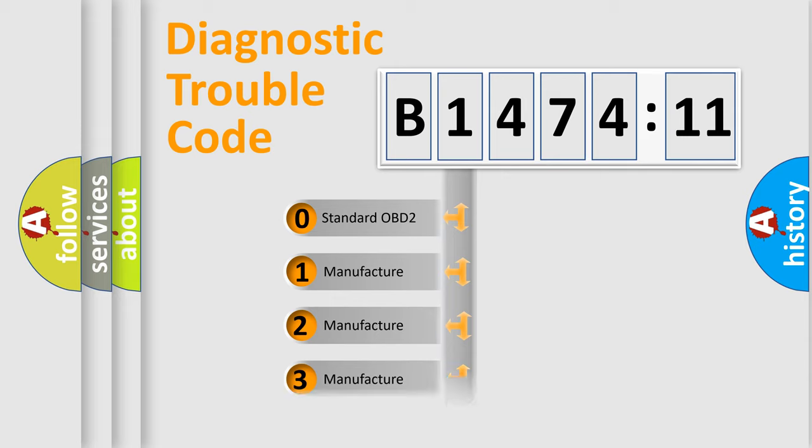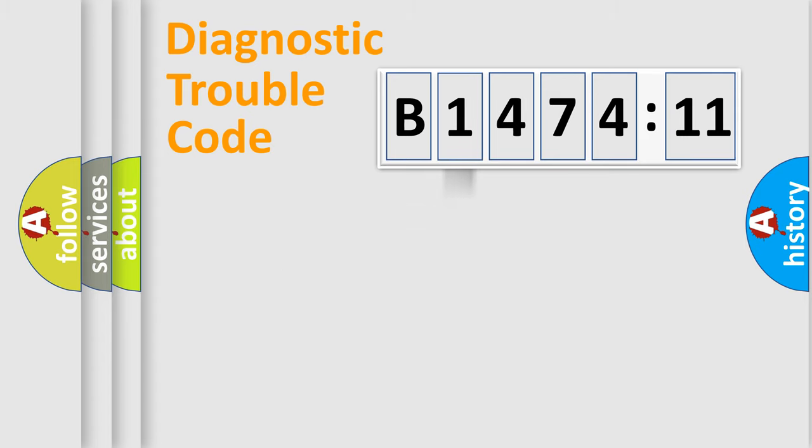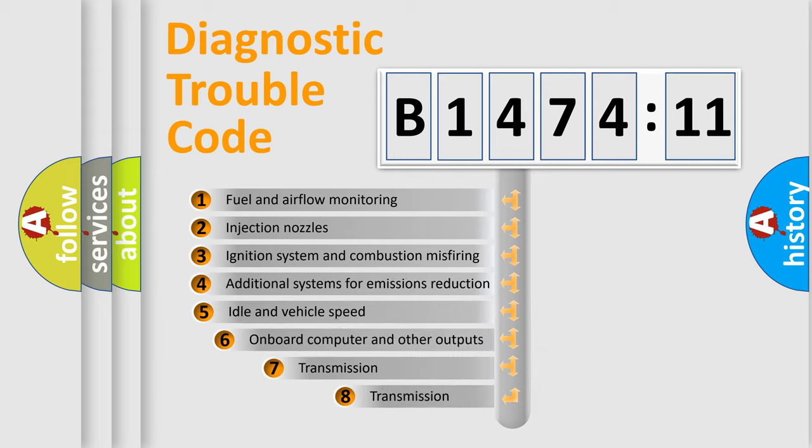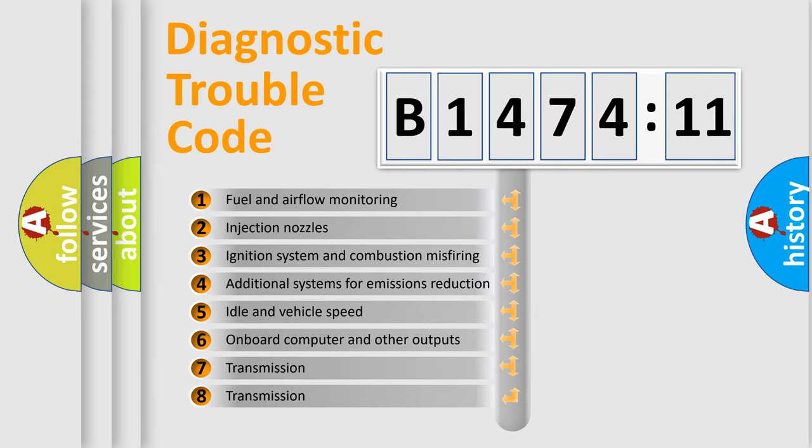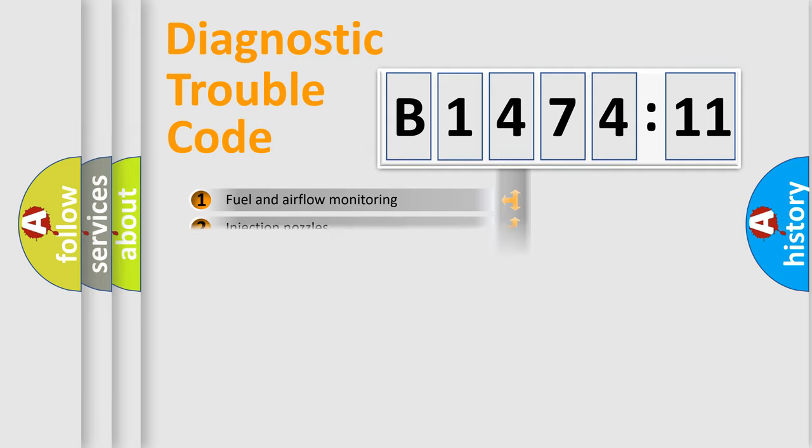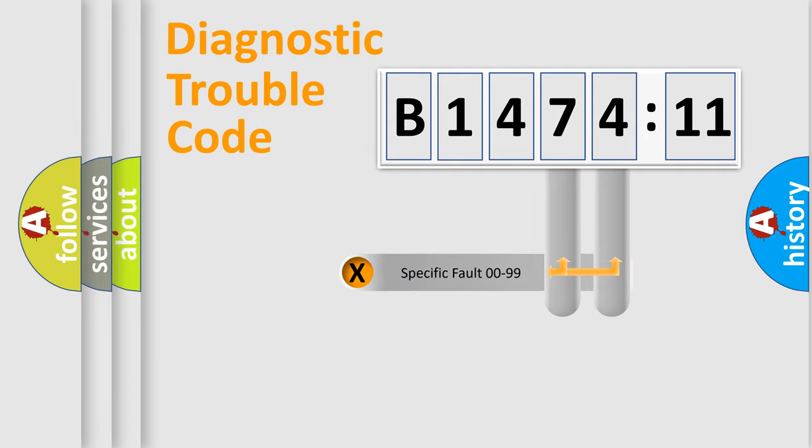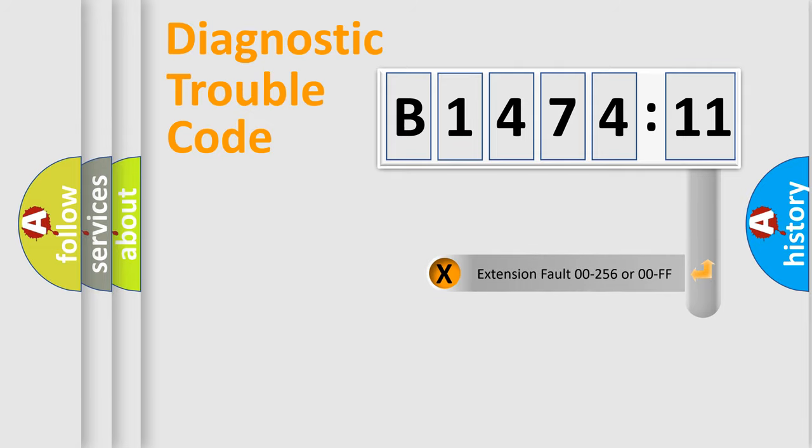If the second character is expressed as zero, it is a standardized error. In the case of numbers 1, 2, 3, it is a manufacturer-specific error. The third character specifies a subset of errors. The distribution shown is valid only for the standardized DTC code. Only the last two characters define the specific fault of the group.